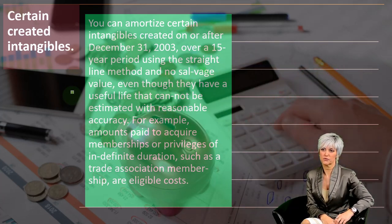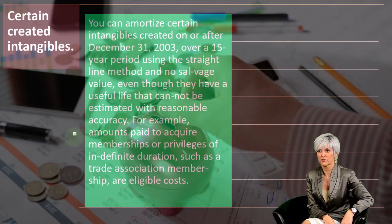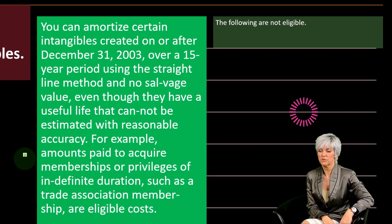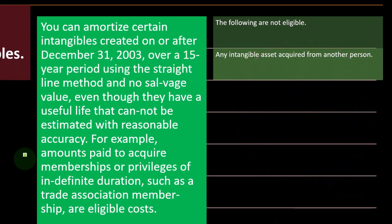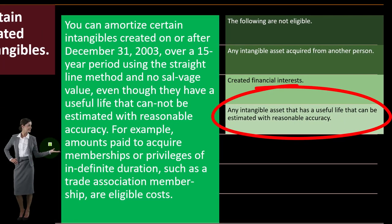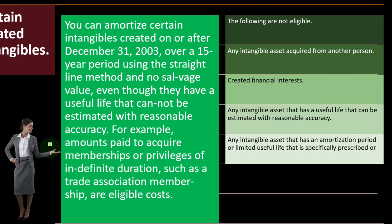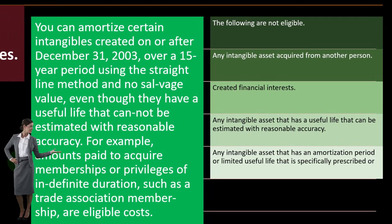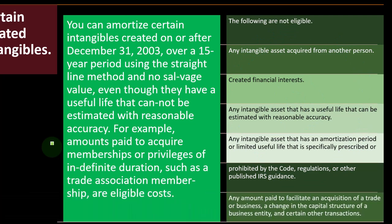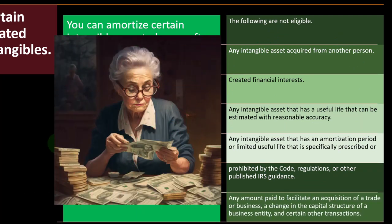The following are not eligible for this treatment: any intangible asset acquired from another person, created financial interests, any intangible asset with a useful life that can be estimated with reasonable accuracy, any intangible asset with an amortization period or limited useful life specifically prescribed or prohibited by the code, regulations, or other IRS guidance, and any amount paid to facilitate an acquisition of a trade or business, a change in the capital structure of a business entity, and certain other transactions.